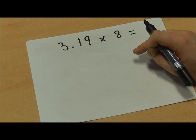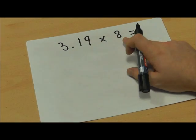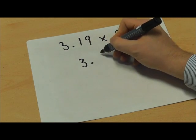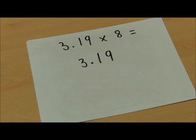In this example we're going to look at how we can use short multiplication to multiply a decimal number by a whole number. So as ever we're going to use our column method to find the answer to 3.19 times 8.